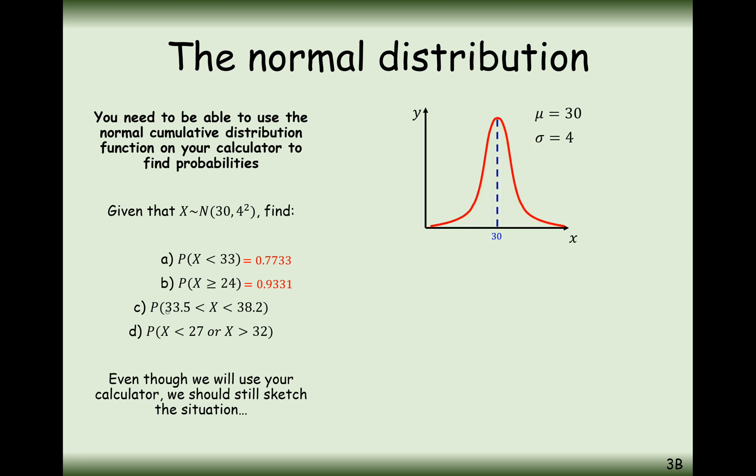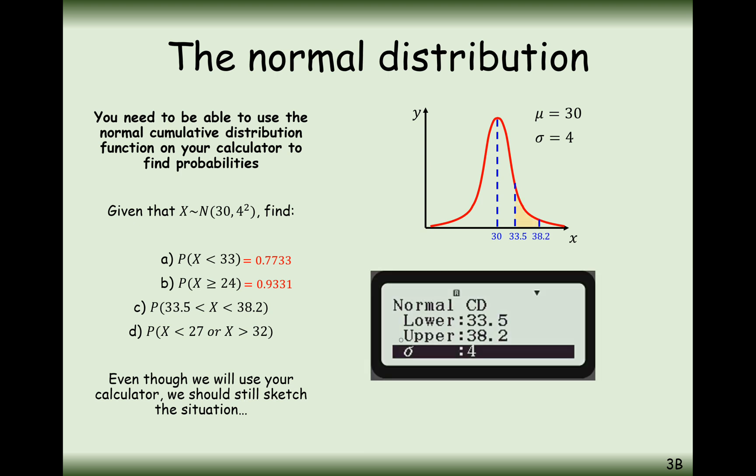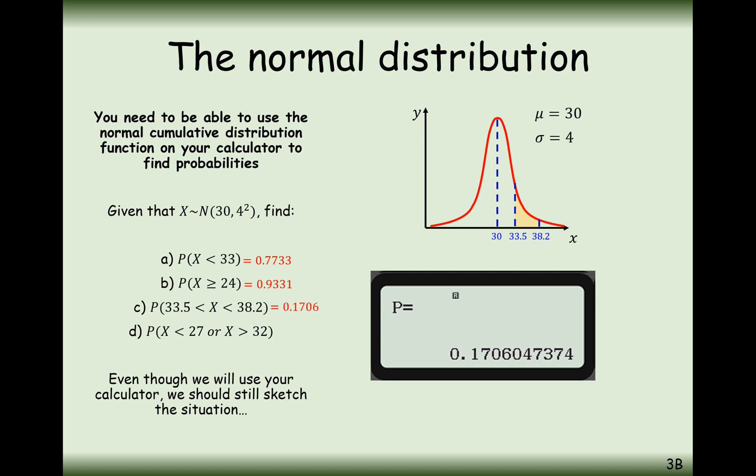For the next question, we want to work out the probability that the outcome is between 33.5 and 38.2. Go into our normal CD mode and type in the lower boundary of 33.5, the upper boundary of 38.2, standard deviation and mean. We get a final answer of 0.1706. According to our graph, that would be a good approximate for the answer.